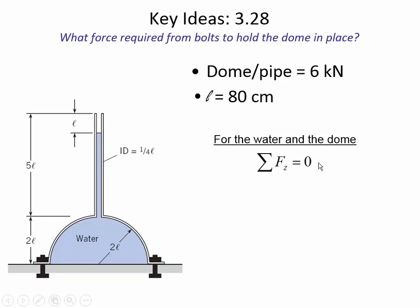We want to know what is the minimum force required to hold the dome in place so that the water doesn't leak out. It's a force balance in the vertical direction. Think of the system as the dome and the water. The table is pushing up on the water with the same force that the water is pushing down on the table. The pressure at the bottom times the area at the bottom is like an external force pushing up on the system — that's an upward force. Then the bolts push down, along with the weight of the water and the weight of the dome.